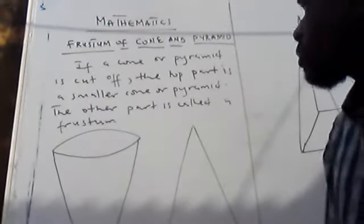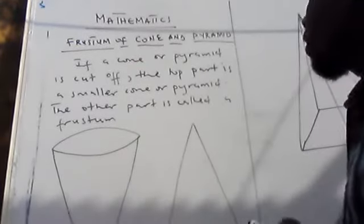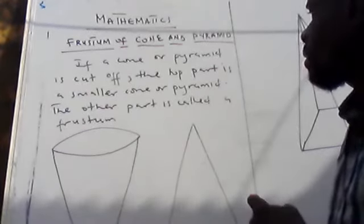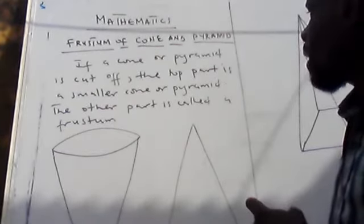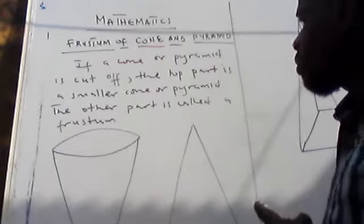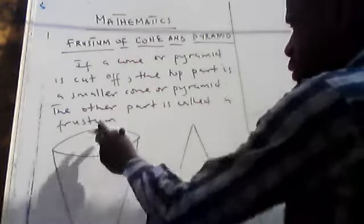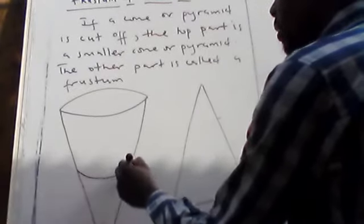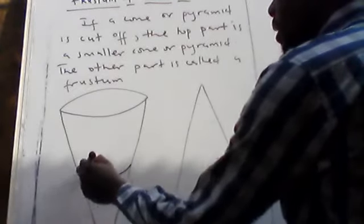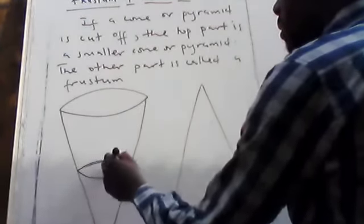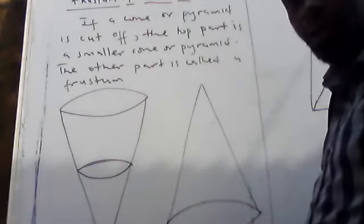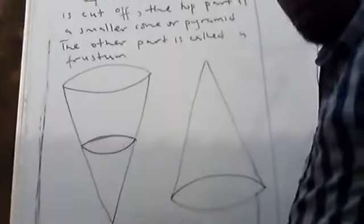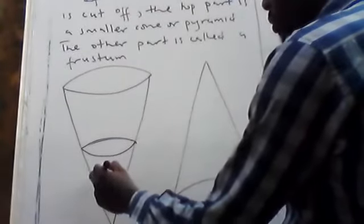Now I want to tell you the meaning of the frustum of a cone. Look at what I wrote on the board: if a cone or pyramid is cut off, the top part is called the smaller cone. Let's assume this cone is cut off from here — if it is cut off, you will have a smaller cone up here.